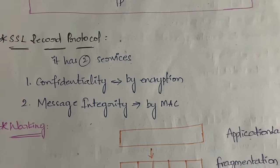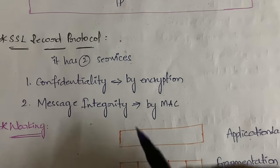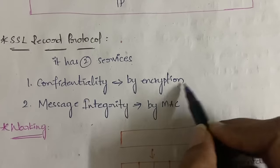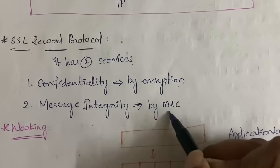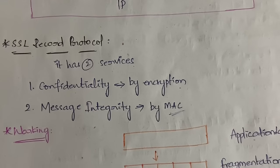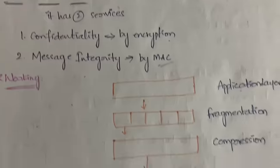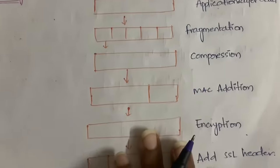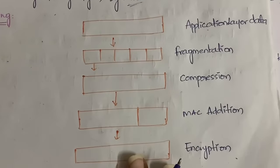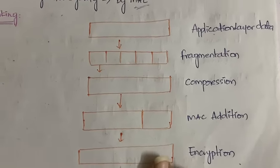Confidentiality means the message is not known to a third person. You can achieve confidentiality by encryption, and message integrity you can achieve by using MAC - Message Authentication Code. I'll explain this with a diagram.